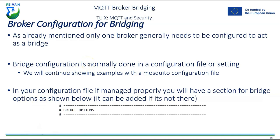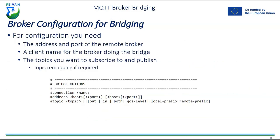Generally, only the broker that's sending data needs to be configured to act as a bridge. That bridge configuration is done in configuration files, similar to all other settings. If the file is managed properly, there should be a section for bridge options. For configuration, you need the address and port of the broker you're connecting to, a client name for the bridging broker, and the topics you want to subscribe to and publish.